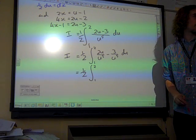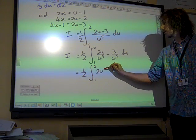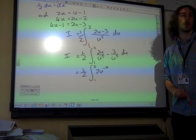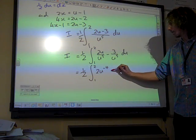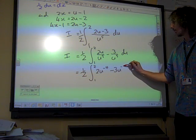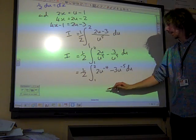2u over u to the 5. If we sort them out, that's 2u to the minus 4. And this is 3u to the minus 5. I haven't integrated yet.